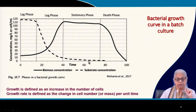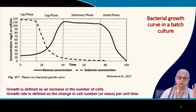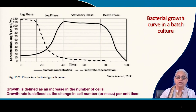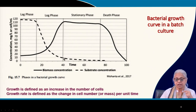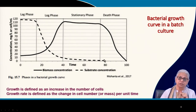Look at the substrate concentration — it is the reverse of the biomass concentration. In the lag phase there is no significant utilization of substrate. As the exponential phase takes off, substrate consumption is very fast and you get exponential decay in substrate concentration. In the stationary phase it is more or less horizontal, and in the death phase most of the substrate has been consumed and become part of the biomass.